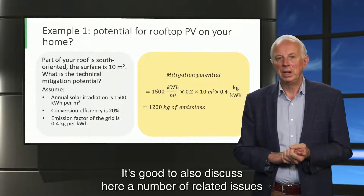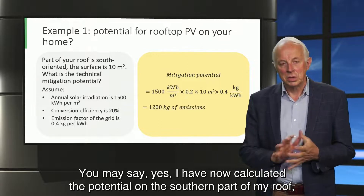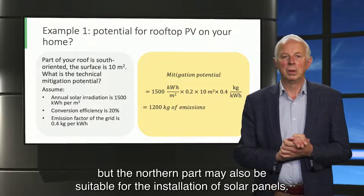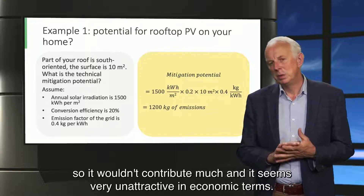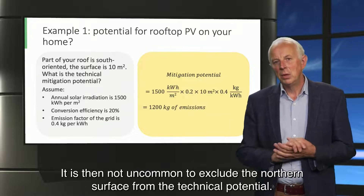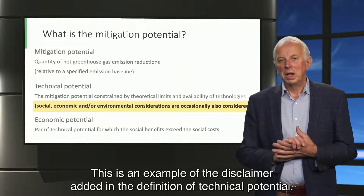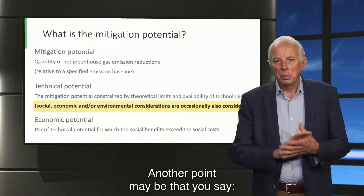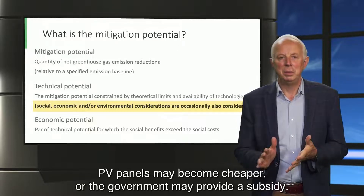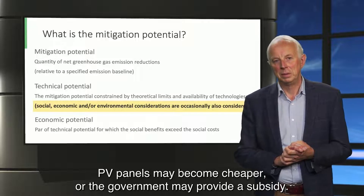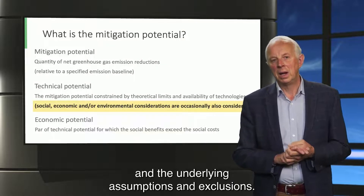It is good to discuss a number of related issues that have to do with the definition of technical potential. You may say you have now calculated the potential on the southern part of your roof, but the northern part may also be suitable for solar panels. However, the solar radiation on a northern-facing surface is very low, so it wouldn't contribute much and seems very unattractive in economic terms. It is not uncommon to exclude the northern surface from the technical potential — this is an example of the disclaimer in the definition. Another point: you might say you don't have the money to invest in a solar system. That is not a reason to exclude the option — PV panels may become cheaper or the government may provide a subsidy. Always be transparent on how a technical potential is calculated and the underlying assumptions and exclusions.